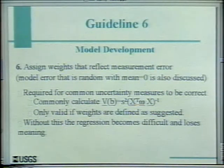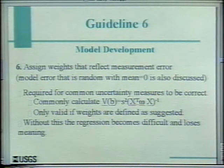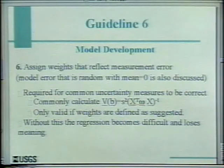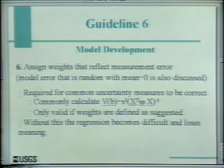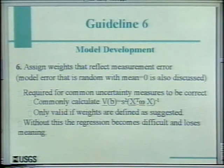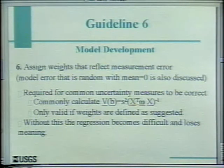Why is it important to think about errors in this way? First, it's required for common uncertainty measures to be correct. All regression models will calculate a standard deviation of the prediction using this equation. V of B is the variance-covariance matrix of the parameters, and the diagonal of that matrix contains the variances of the estimated parameters — take the square root and you get the standard deviation. This equation is only valid if the weights have been assigned with at least an attempt to make them reflect measurement error. Otherwise, it can be hugely off — there are additional terms you'd have to add that nobody has any idea how to get.